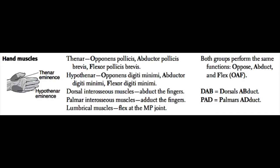In the pinky, or the small fifth finger, we have the hypothenar eminence, which is also composed of three muscles: opponens digiti minimi, abductor digiti minimi, and flexor digiti minimi. It's exactly the same as the thenar eminence — both are OAF: oppose, abduct, and flex. The thenar eminence is controlled by the median nerve, and the hypothenar eminence is controlled by the ulnar nerve.